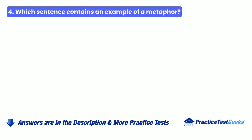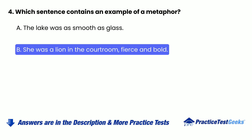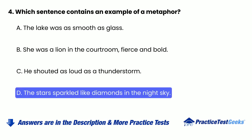Question 4: Which sentence contains an example of a metaphor? A. The lake was as smooth as glass. B. She was a lion in the courtroom, fierce and bold. C. He shouted as loud as a thunderstorm. D. The stars sparkled like diamonds in the night sky.